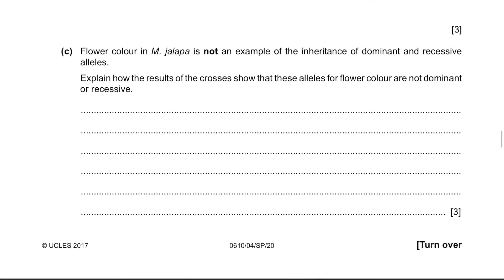Flower colour in M. jalapa is not an example of the inheritance of dominant and recessive alleles. Explain how the results of the crosses show that the alleles for flower colour are not dominant or recessive. If these flowers had dominant or recessive alleles, there would be no mixture of colours like red and yellow producing orange. The offspring would be either red or yellow — the exact same trait as one of the parents. So the phenotype of R-Y is different from either parent; the phenotype was a mixture of two colours.